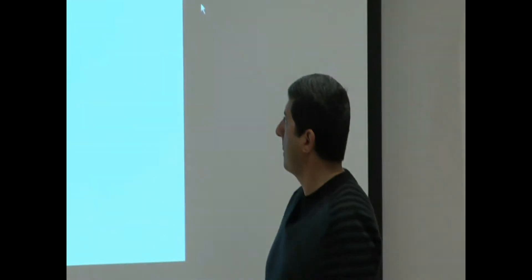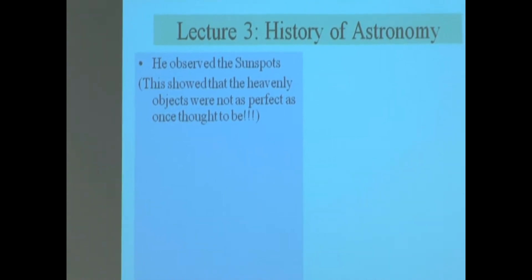What happened? After a couple of weeks, the sunspot disappears. And another sunspot appears somewhere else. Okay? If it's moon, it's not going to disappear, just like that. Observation always defeats any kind of argument, you see. So this showed that the heavenly objects were not as perfect as once thought to be.